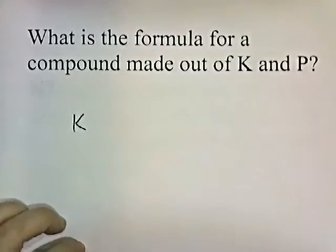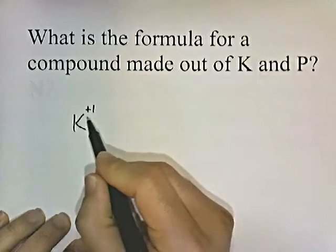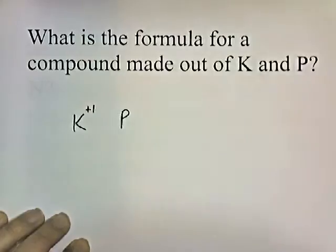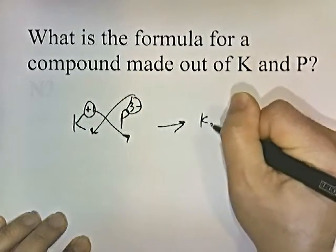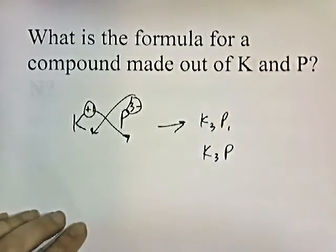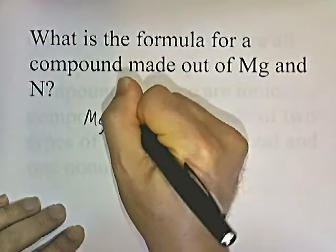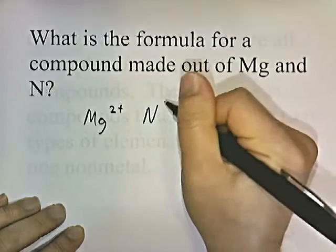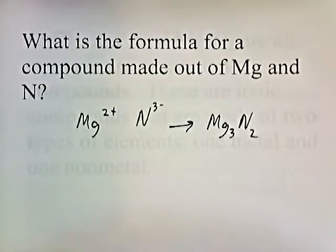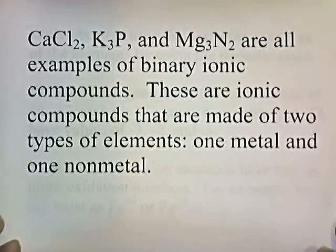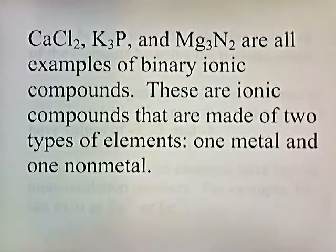What's the formula for a compound made out of K and P? Potassium is in group 1, so it has a plus one charge. Phosphorus is in group 5, so it has a negative three oxidation state. Criss-cross the numbers: this becomes K3P. What about Mg and N? Magnesium is group 2 (plus two), nitrogen is group 5 (negative three): criss-cross gives Mg3N2. These are all examples of binary ionic compounds — two types of elements, one metal and one non-metal.